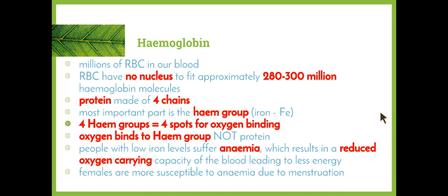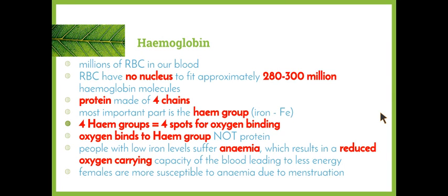When the blood passes by the lungs, oxygen diffuses out of the alveoli and into the capillaries, where it attaches to the heme group in the red blood cells. It's important to note that the oxygen doesn't attach to the protein itself — it attaches to the heme group that is found within that protein.